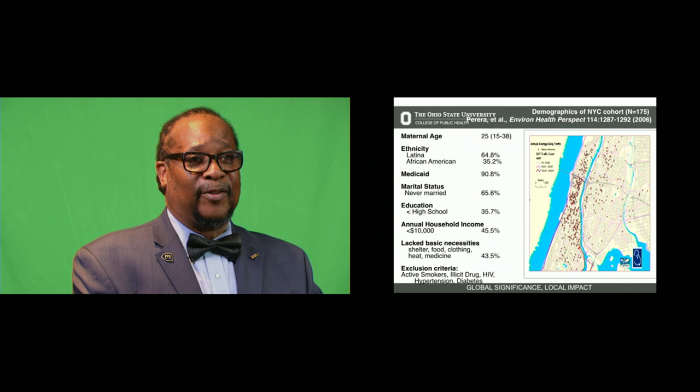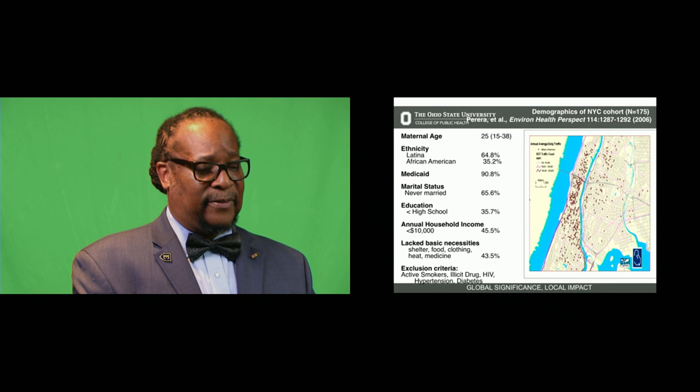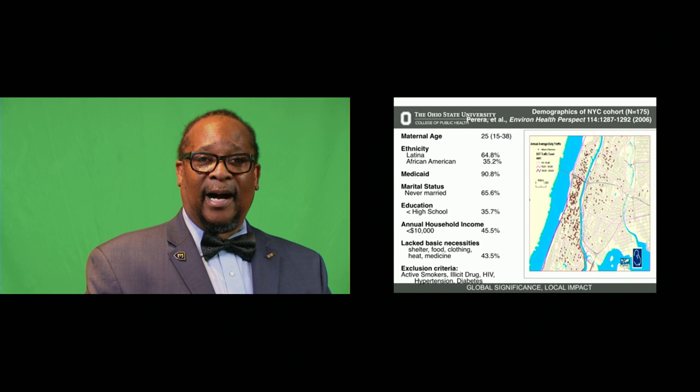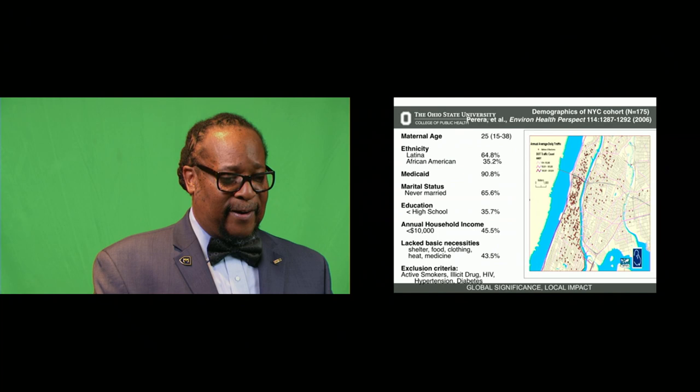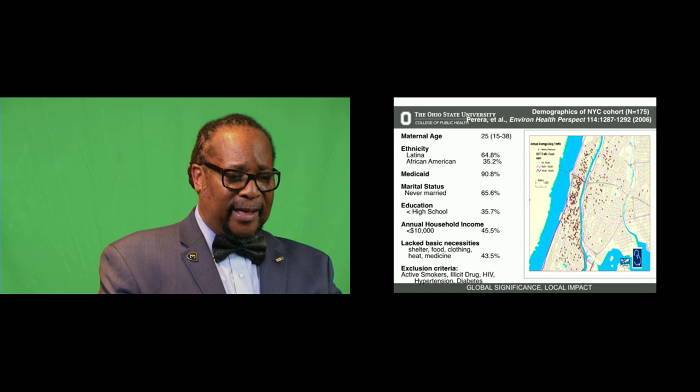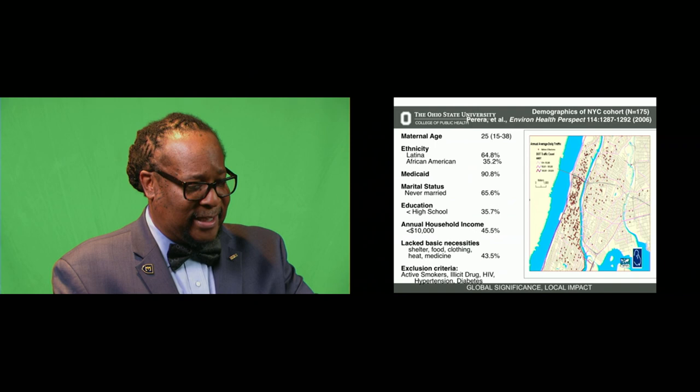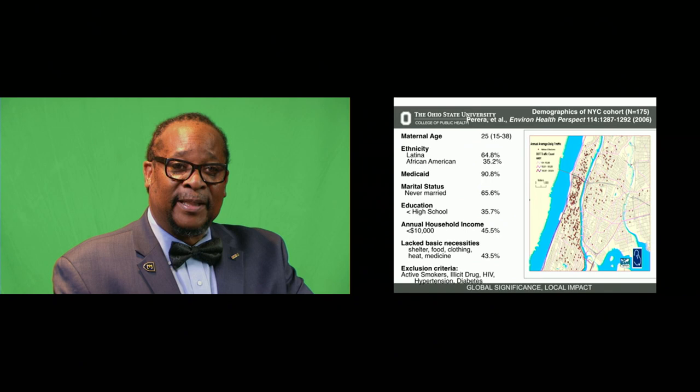This particular study is from the Mailman School of Public Health at Columbia University. The demographics of the New York City cohort: they were relatively young, primarily minority — either Latina or African-American. Ninety percent were on Medicaid, 65.6% had never been married, 35% had less than a high school education, and annual household incomes were pretty low. Exclusion criteria included illicit drug users and individuals who were HIV positive, had hypertension, diabetes, or were active smokers.